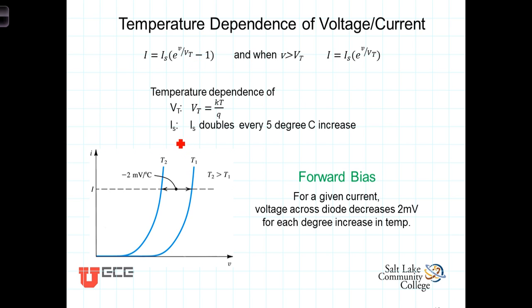We also know that I sub S, the saturation current, is a function of temperature, and it turns out that it doubles about every 5 degree increase in temperature. Most of the calculations we've been doing up to this point are at room temperature or 20 degrees C.